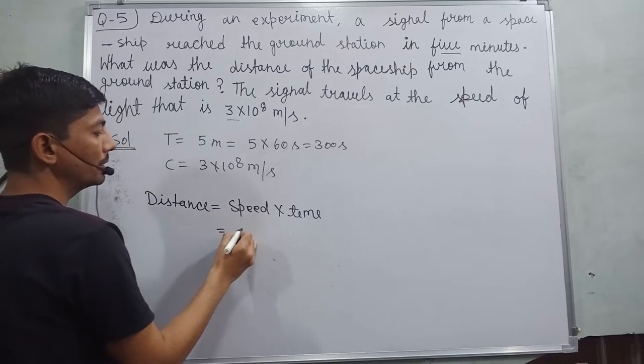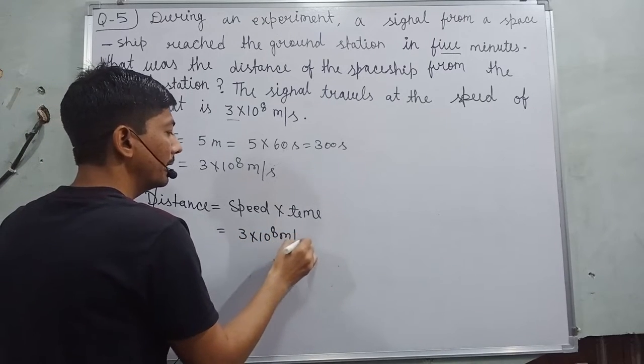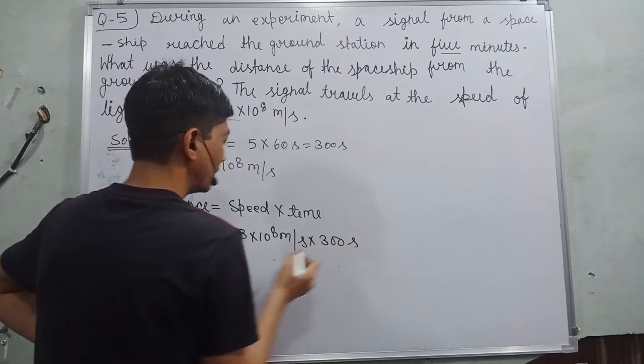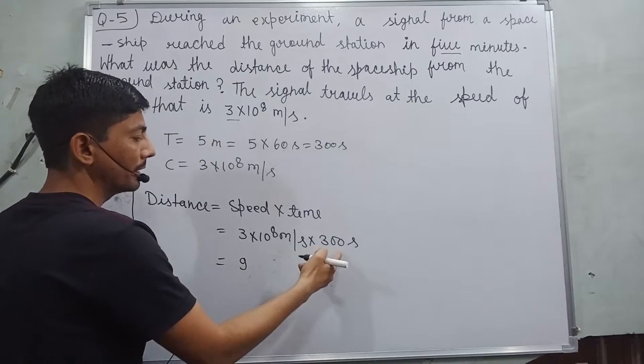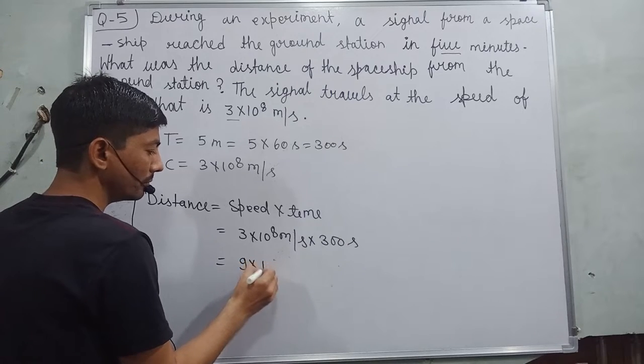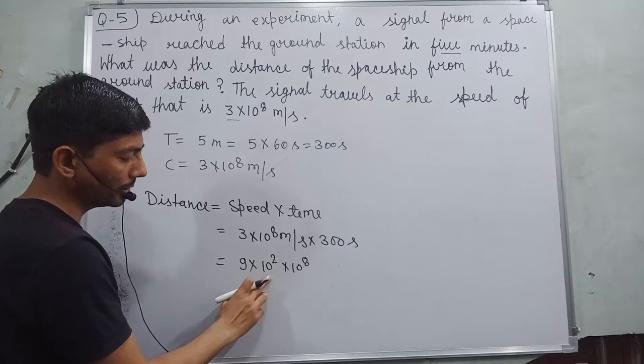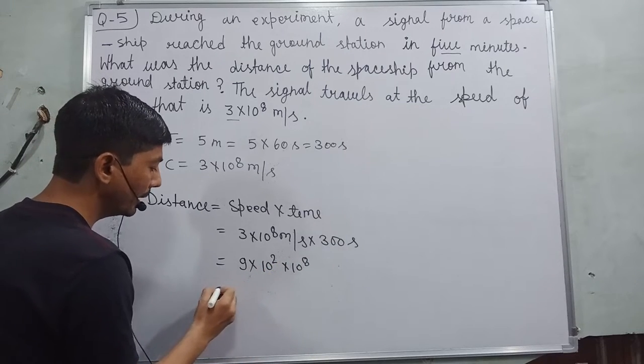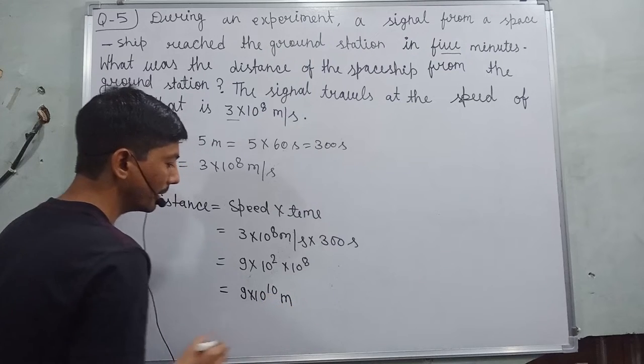After putting values, speed is 3 × 10⁸ meter per second and time is 300 seconds. So 3 × 3 is 9, and it will be 10² × 10⁸. In this case, powers will be added, so it will become 9 × 10¹⁰ meters.